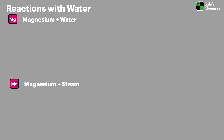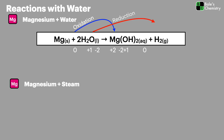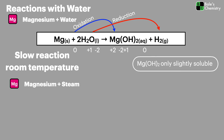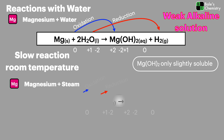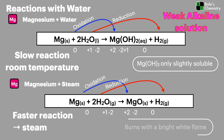Moving on to magnesium, we see two different reactions with water because we can have liquid water and steam. With liquid water it forms magnesium hydroxide — magnesium is oxidized and hydrogen is reduced. This reaction is really slow at room temperature because magnesium hydroxide is only slightly soluble, so it coats the magnesium in a fairly unreactive layer, meaning it only forms a weakly alkaline solution. When magnesium reacts with steam, magnesium oxide is formed instead, and this reaction is much faster, burning with a really bright white flame.